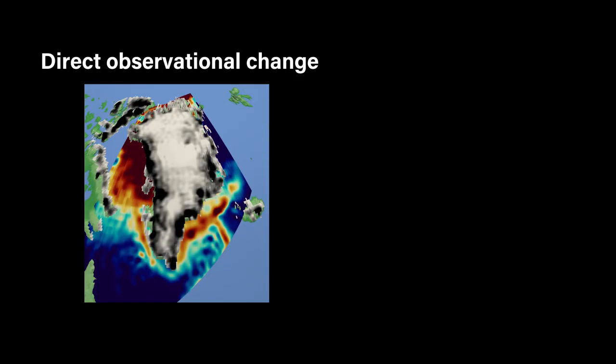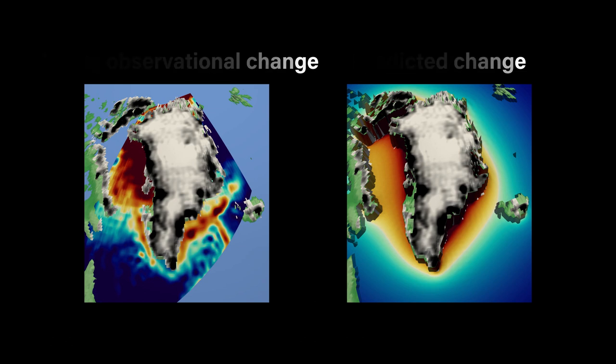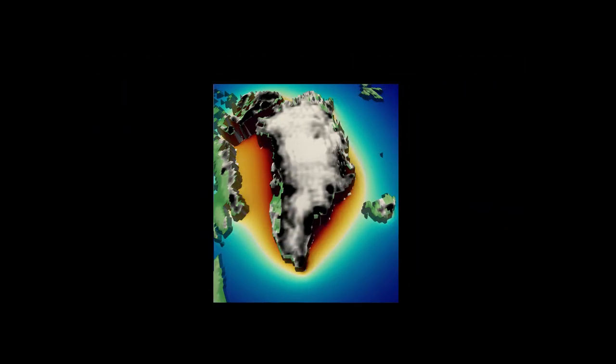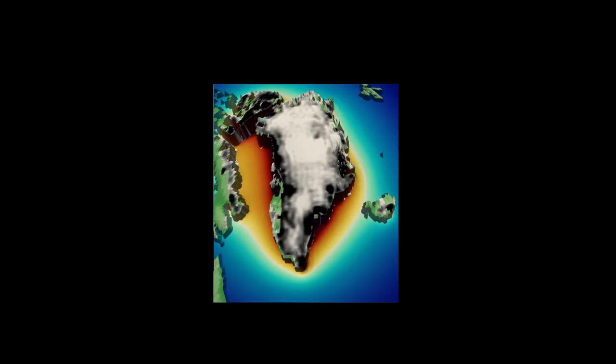We then have two maps of sea surface height change around Greenland: one from direct observations from satellites, and one from our computer model — our simulation of sea surface height over the last few decades. We compare those two maps to see how similar they are using statistical methods.